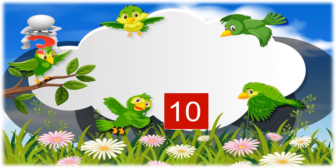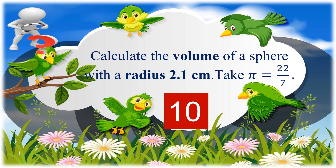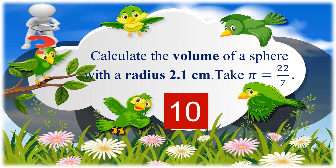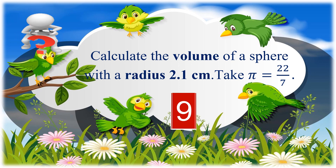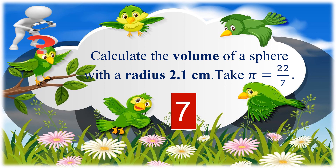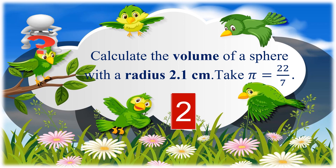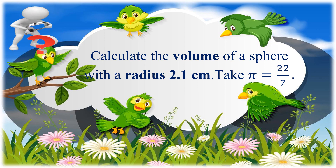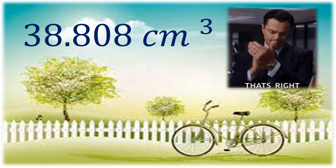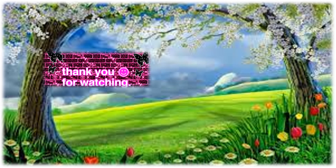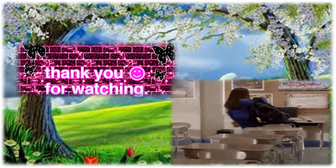Let us have another question. Calculate the volume of a sphere with a radius of 2.1 centimeters, taking pi equal to 22 over 7. You have 10 seconds to answer. The answer is 38.808 cubic centimeters. That's it for now. Thank you for watching. Hope you learned something today. See you again next week. Bye!